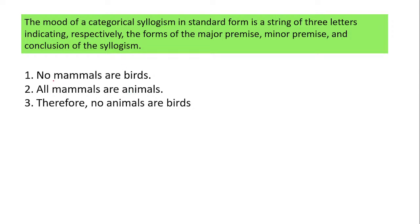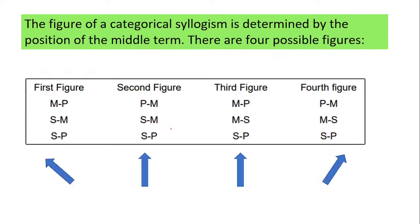For example: 'No mammals are birds. All mammals are animals. Therefore, no animals are birds.' No mammals are birds is E; all mammals are animals is A; no animals are birds is E — so the mood of this syllogism is E-A-E. Figure tells us where the middle term is located in the syllogism.